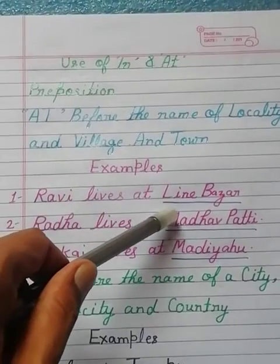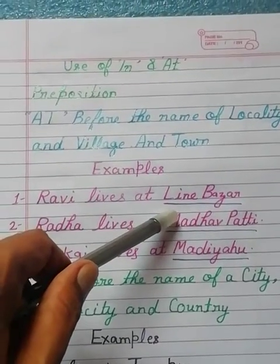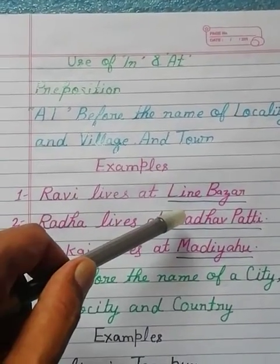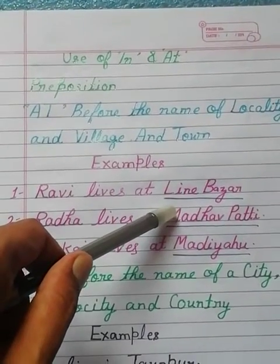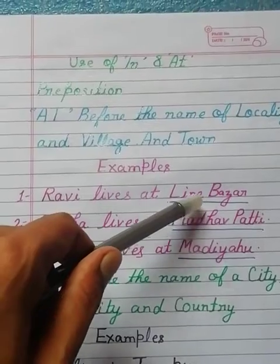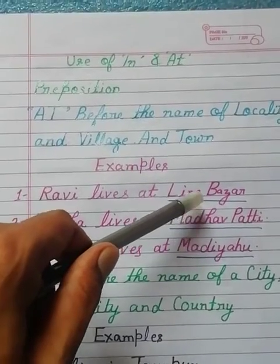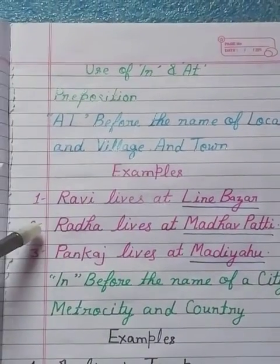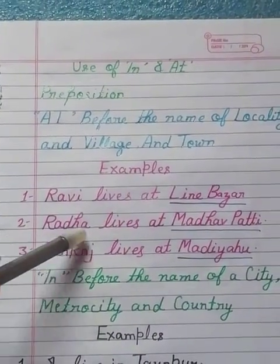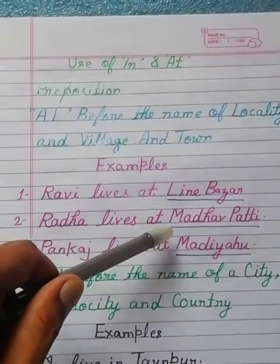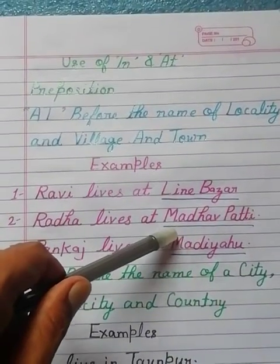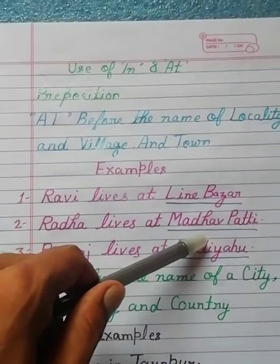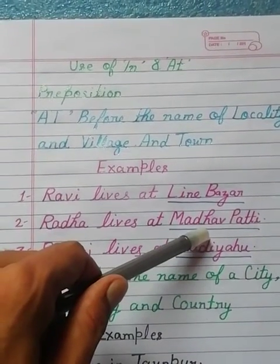तो रवी लिवस एट लाइन बजार। तो रवी लाइन बजार में रहता है। ये लाइन बजार आपकी लोकैलिटी है।